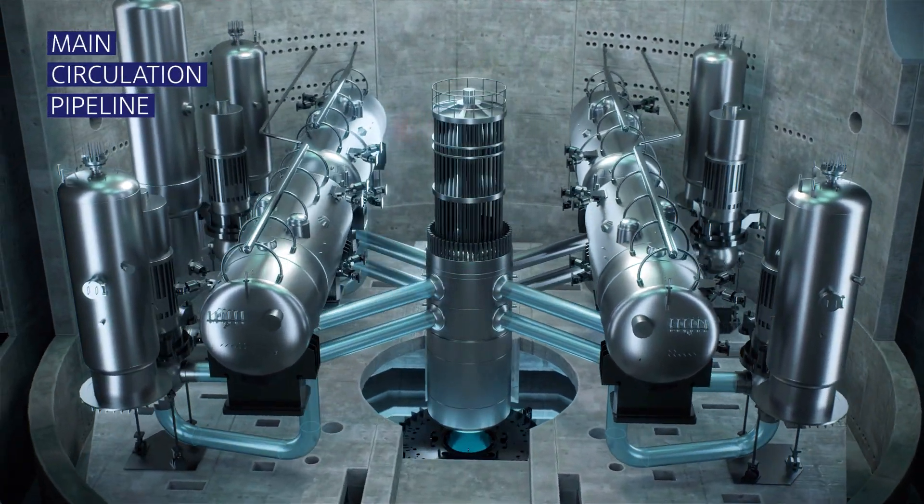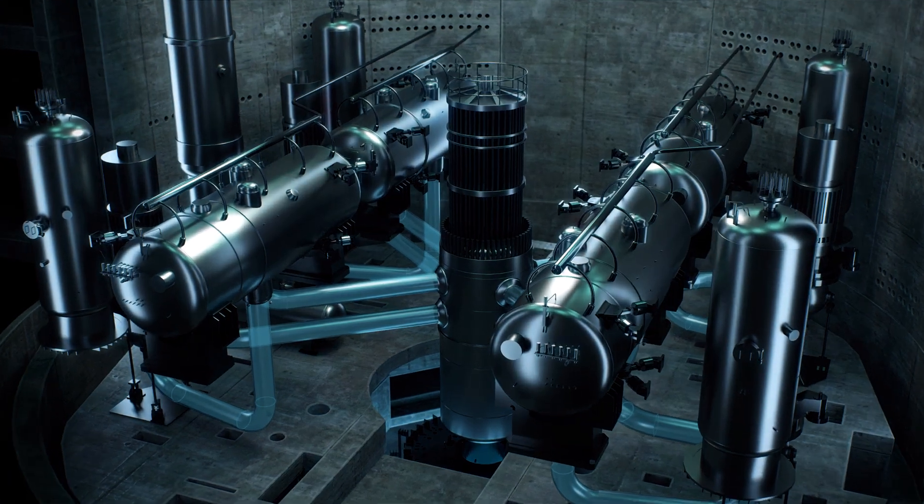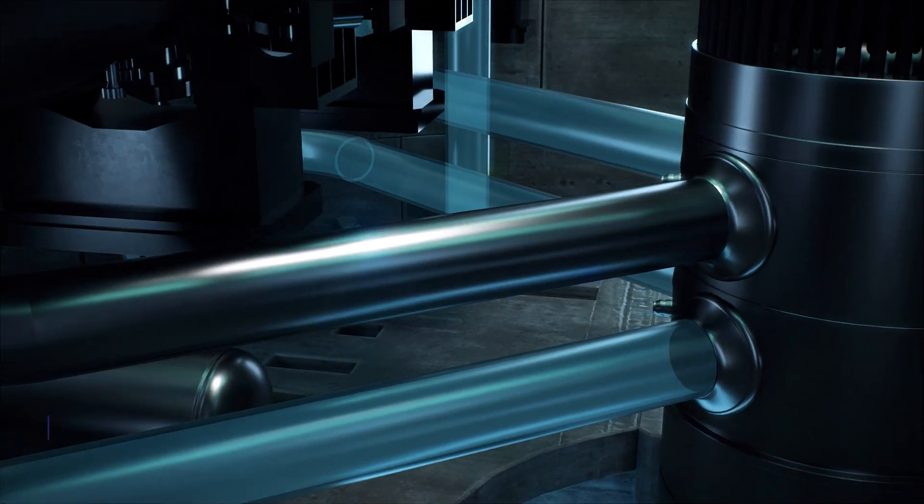The main circulation pipeline is located inside the power unit and is designed to transfer coolant water under high pressure. The length of the pipeline is 160 meters.